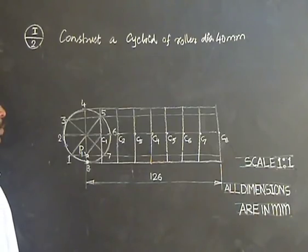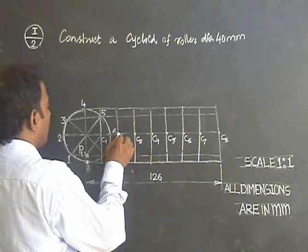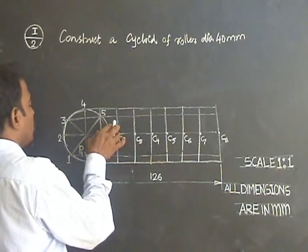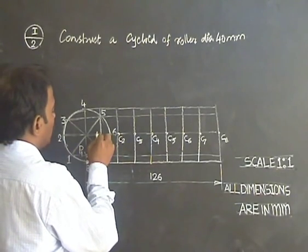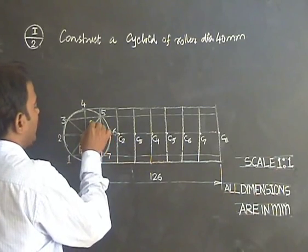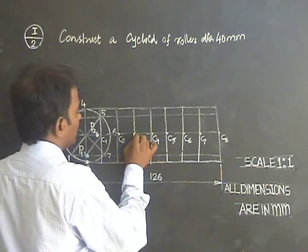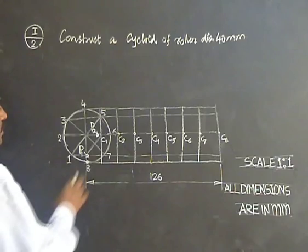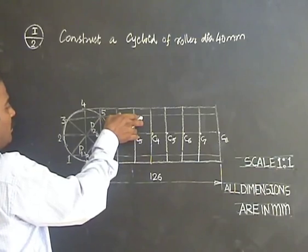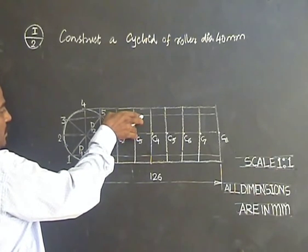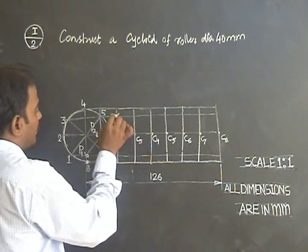Similarly, with C2 as center, take the same fixed radius. Draw the arc on line 2, the line corresponding to 2, and you get one arc. This point of time is P2. Then move on to C3, keeping C3 as center with the radius as same fixed radius of the roller. Put the arc on the line connected with 3, and we get point P3.